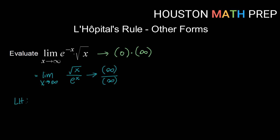So I'm going to write LH to indicate I'm using L'Hôpital's rule and apply. This will be the limit as x goes to infinity. Remember, I take my derivatives independently. The derivative of square root of x, or x to the 1/2, will be 1/2 x to the negative 1/2. And the derivative of the denominator, e to the x, is of course e to the x.